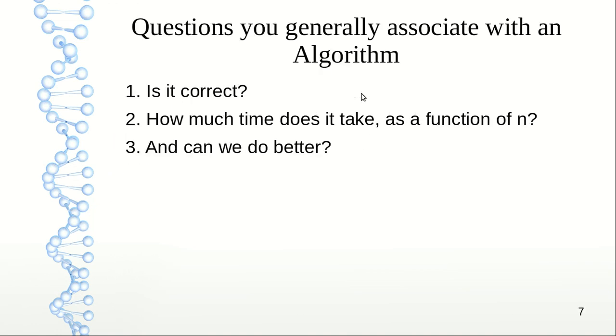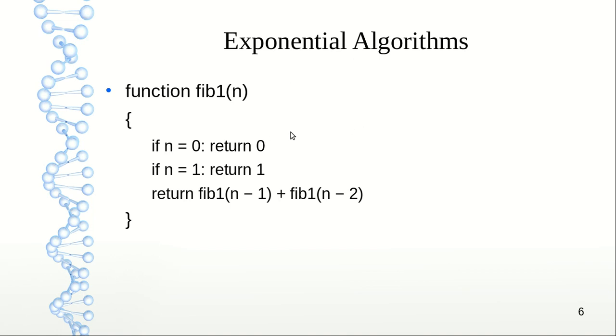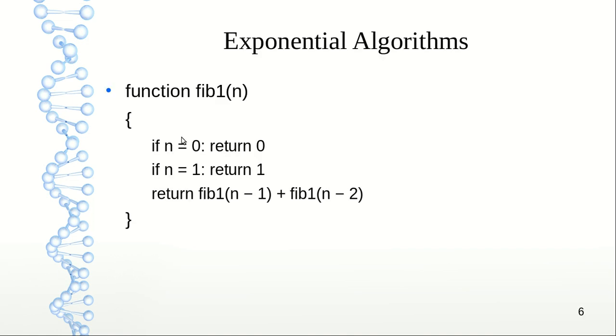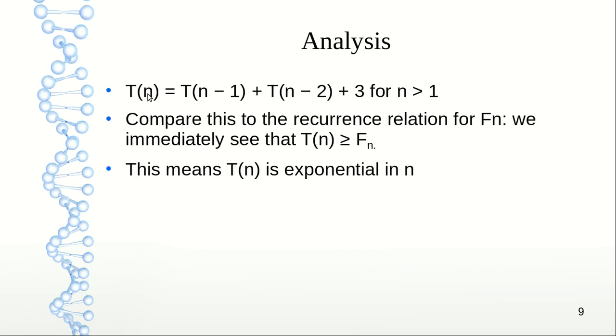Let me explain how this comes. The constant 3 which you are seeing here is due to steps 1, 2, and 3—these three basic steps. The Tn minus 1 is to calculate this fib(n minus 1). If you take Tn to calculate this function, then you will be taking Tn minus 1 to calculate this function, and similarly Tn minus 2 to calculate this function. When you calculate these two functions, after that only can you add the values. That's why the time expression is Tn equals Tn minus 1 plus Tn minus 2 plus 3.